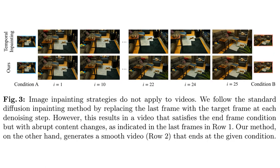Figure 3 shows us the stark contrast. Up top, you see the issues with other diffusion techniques for filling in images, frequently leading to awkward jumps. But look below — TRF makes the transitions blend seamlessly. The way TRF balances the action between the opening and closing frames is pretty impressive. It ensures the video flow is smooth and continuous from beginning to end.